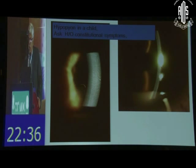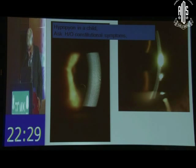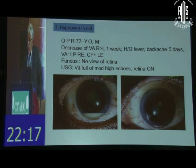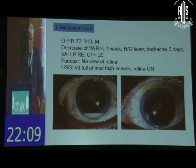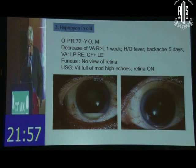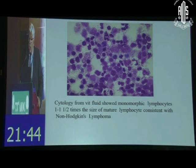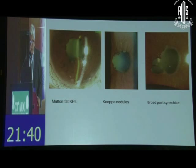In a patient who is very young — say four or five years old — coming with a hypopyon, you need to ask about constitutional symptoms, because leukemias may present as masquerade uveitis, and you could be saving the patient's life. On the other hand, a hypopyon in an old person — say a 70-year-old patient — with no history of trauma or surgery but with fever and backache and no view of the retina: this is consistent with non-Hodgkin lymphoma. At extremes of age presenting with uveitis, you must rule out masquerade conditions and malignancies.